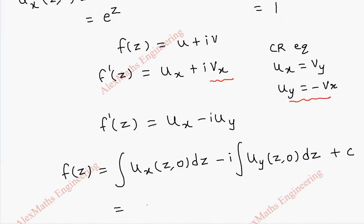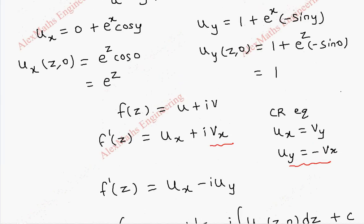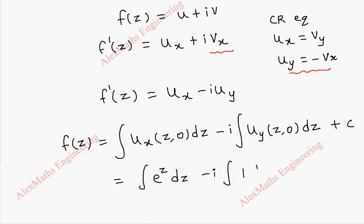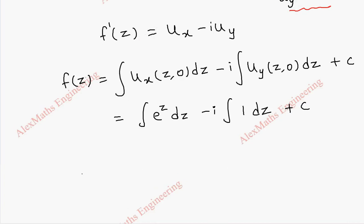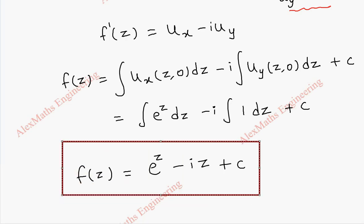u_x is e^z, so the first term is integral of e^z dz minus i integral of 1 dz plus c. Finally, we get f(z) = e^z - iz + c. Thus we got the analytic function f(z).